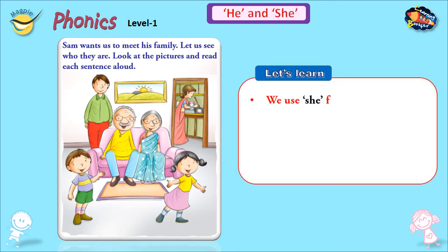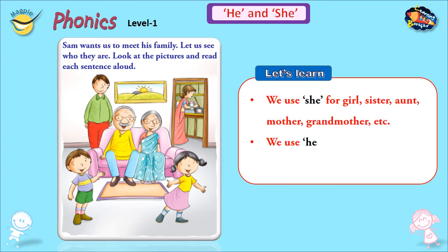We use 'she' for girl, sister, aunt, mother, grandmother, etc. We use 'he' for boy, brother, uncle, father, grandfather, etc.